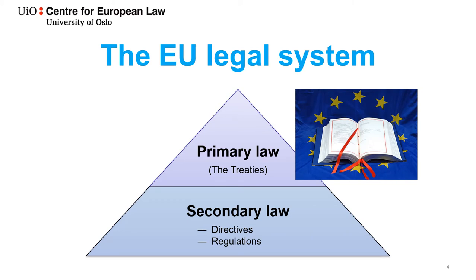The foundation of the EU legal system — the primary law — is its constitutive treaties: the Treaty on the European Union, the Treaty on the Functioning of the European Union, and the Charter on Fundamental Rights. In practice these treaties function as a constitution of the Union and its legal system. The treaties can only be amended by unanimous agreement between the member states, the so-called masters of the treaties.